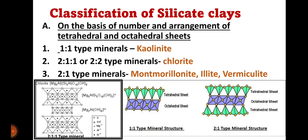Now we understand the classification of silicate clay minerals based on the number and arrangement of tetrahedral and octahedral sheets. These are three types: first is the 1:1 type mineral, with kaolinite as an example; second is the 2:1:1 type mineral, with chlorite as an example; and third is the 2:1 type mineral, with examples being montmorillonite, illite, and vermiculite.